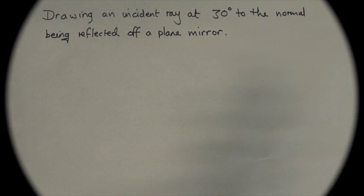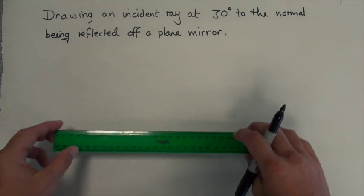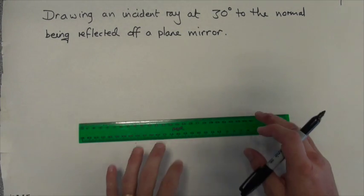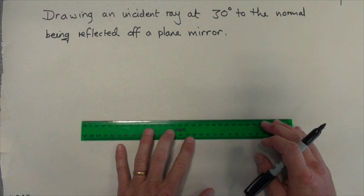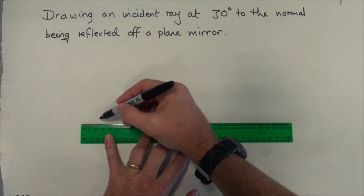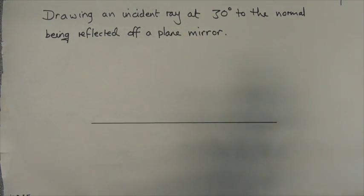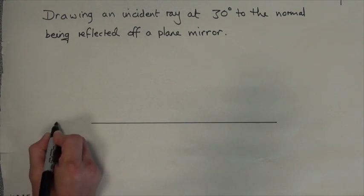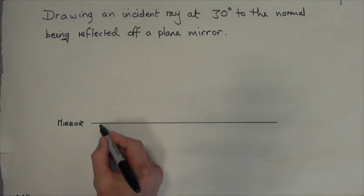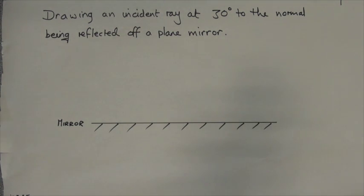Let's start by drawing the template as we saw in an earlier video. To draw the template, we'll start by drawing our mirror. The mirror consists of a horizontal straight line. We'll label it 'mirror' and then put some hatch lines alongside to show it's a solid background so nothing can pass through.